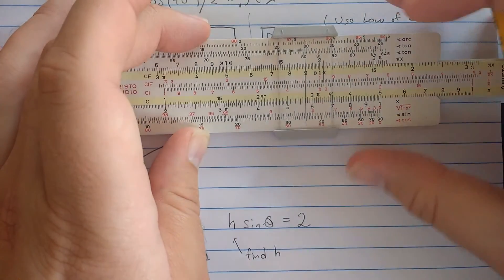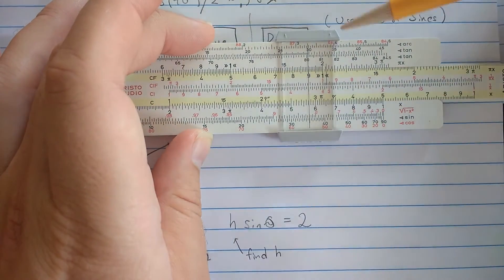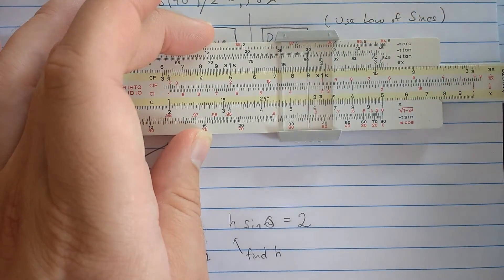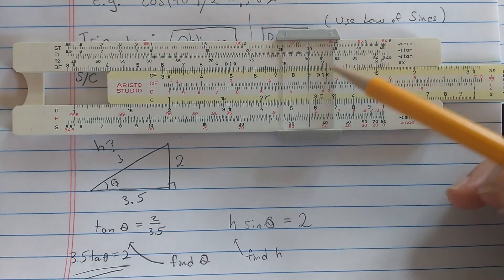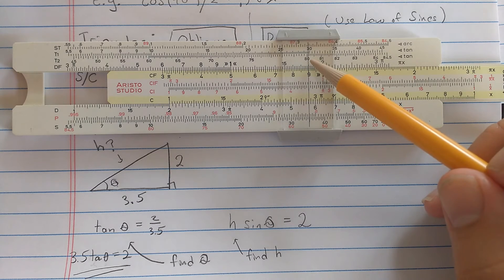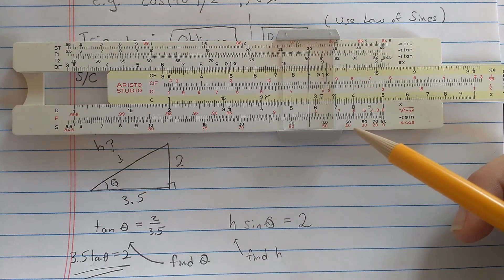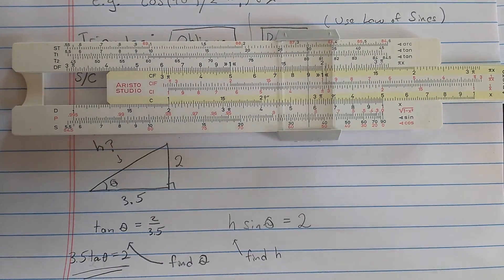Well, so then what's reading up on the tangent scale is the angle I'm looking for, angle theta. So angle theta here looks like about 29, 29, a little under 29.8. So let's say 29.7.